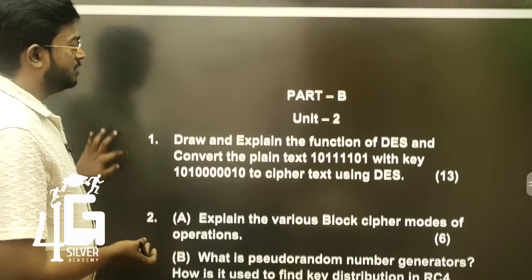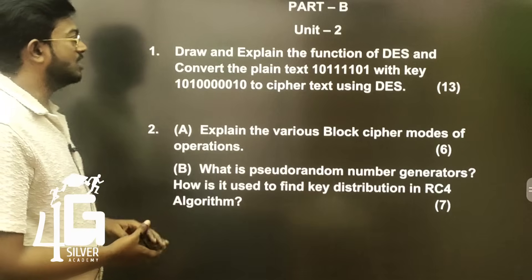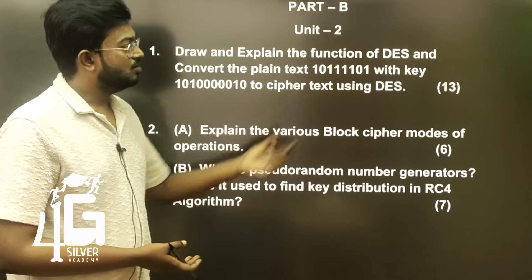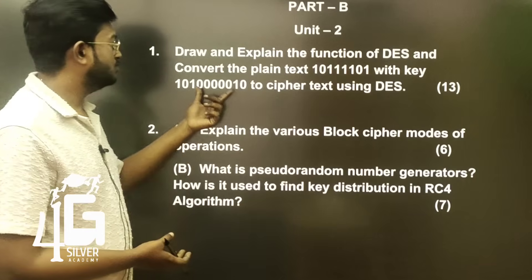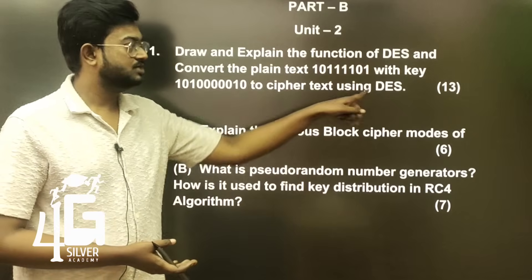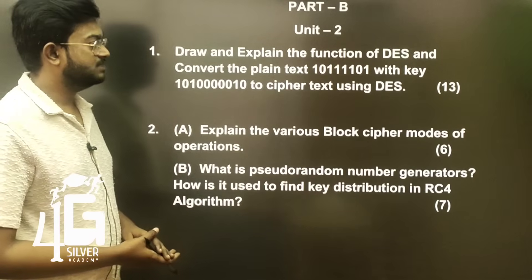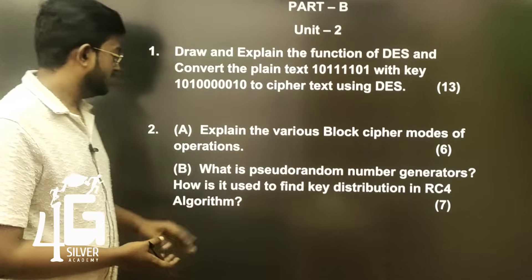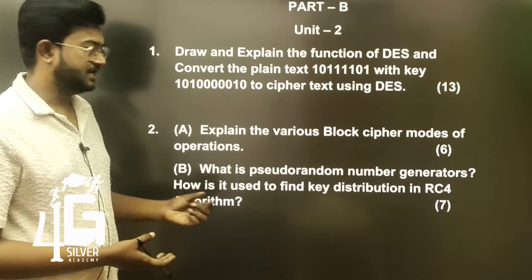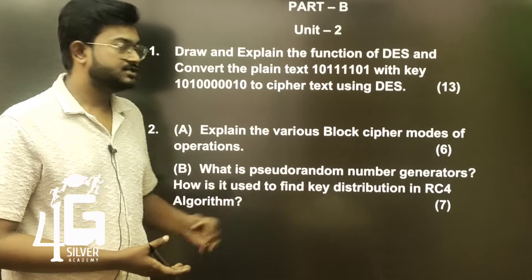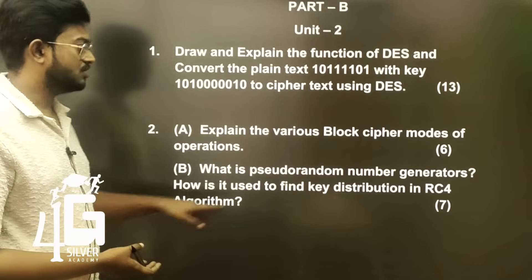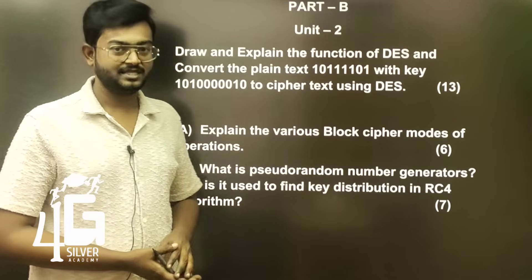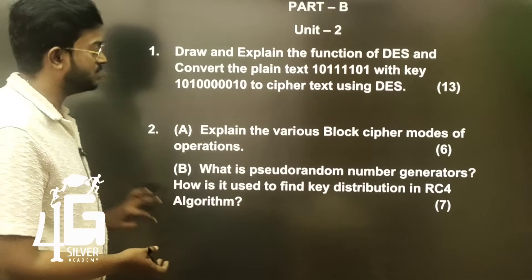Part B, Unit 2 important questions: Draw and explain the function of DES, and convert plain text with a given key to ciphertext using DES. Explain the various block cipher modes of operation — very very important 6-mark question. What is a pseudo-random number generator and how is it used to find key distribution in the RC4 algorithm? This is a 7-mark question.